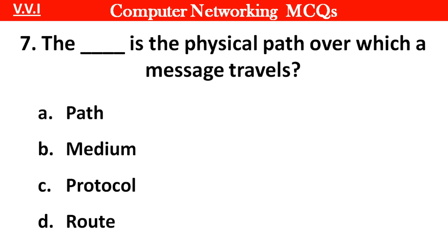Question 7: The blank is the physical path over which a message travels. Options: A. Path, B. Medium, C. Protocol, D. Route. Right answer is option B: Medium.